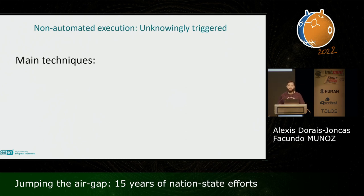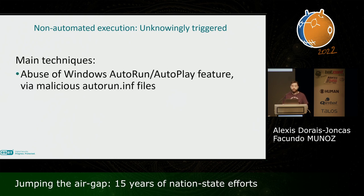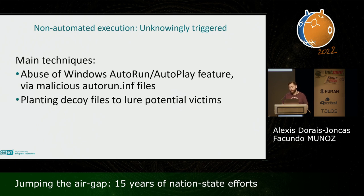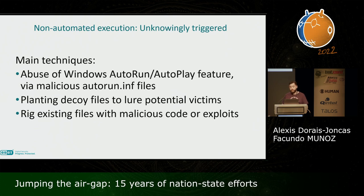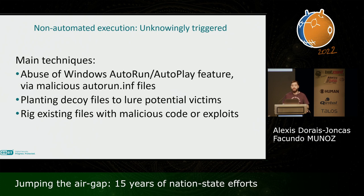For our next category, we take a step back from the complexity of software vulnerabilities and instead focus on the human factor and deception tricks. The aim is to trick an unsuspecting user into executing malicious code. We observe three techniques: abuse of Windows AutoRun and AutoPlay features, planting decoy files to lure potential victims, and rigging existing files with malicious code. For example, DarkHotel's Retro malware replaced Word Office documents with RTF copies containing an exploit that would launch the malware.